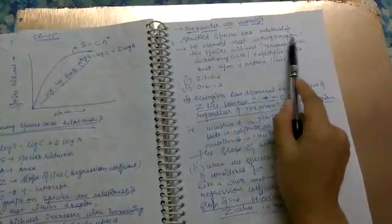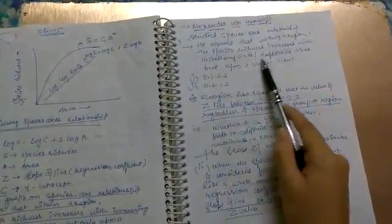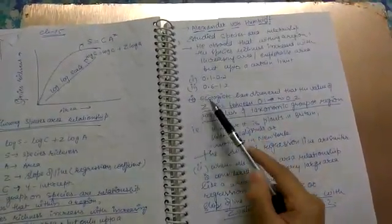Then, Alexander von Humboldt discovered and studied the species-area relationship. He observed that within a region, species richness increases with increase in explorable area but up to a certain limit. Z values range from 0.1 to 0.2 or 0.6 to 1.2.